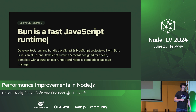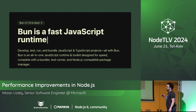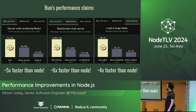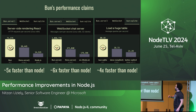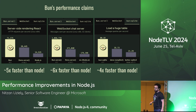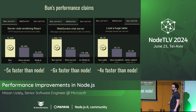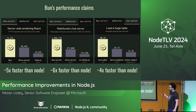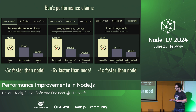Bun really made a splash in the JavaScript runtime world. They claim to be very performant — this is on their website: five times faster server-side rendering, six times faster WebSocket, and four times faster SQLite. These are great numbers. They have a great team. And it makes sense that a lot of people, after seeing these things, came to Node and said, you're not performant enough. Please improve your performance.